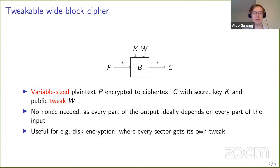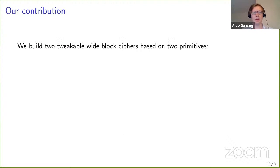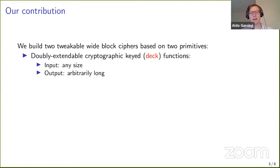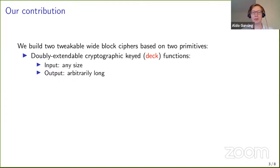It's mostly used in situations where we do not have any space to store a nonce. The main example for this is disk encryption: the size of the block cipher will be the size of a sector, and we can use the sector number as a tweak. We will build two different tweakable wide-block ciphers based on two different kinds of primitives. The first is a doubly extendable cryptographic keyed function, or DAG function, whose input is of any size and which outputs an arbitrarily long string of bits.